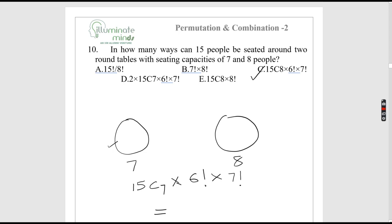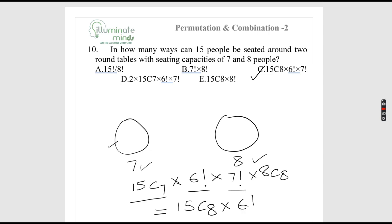Around two round tables with seating capacities of 7 and 8: select 7 from 15 people in 15C7 ways, arrange them in a circle in 6! ways; the remaining 8 sit at the other table in 7! ways. Since 15C7 = 15C8 and 8C8 = 1, the answer is 15C7 × 6! × 7!, which is option C.